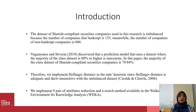In this paper, the majority class of the Shariah-compliant security company dataset is 79.84%. Therefore, we implement Hellinger distance as the ACO heuristic, since Hellinger distance is adequate and scale-insensitive with imbalanced datasets. Bankruptcy datasets also tend to have many attributes. Attribute reduction can solve this problem by choosing only the most valuable attributes for prediction. We experimented with nine pairs of attribute reduction and search methods available in WEKA, the Waikato Environment for Knowledge Analysis.